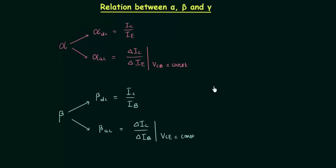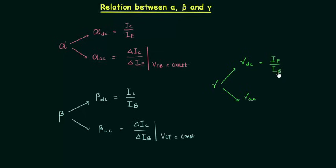Gamma is the amplification factor in common collector configuration, and like alpha and beta we have two types of gamma. Gamma DC is equal to IE divided by IB, and gamma AC is equal to delta IE (change in emitter current) divided by change in base current when the output voltage VCE is constant.